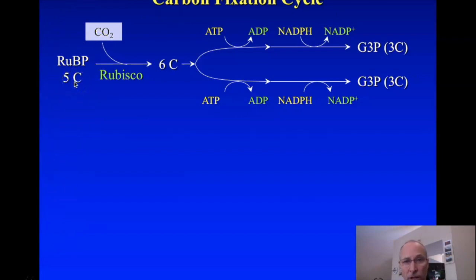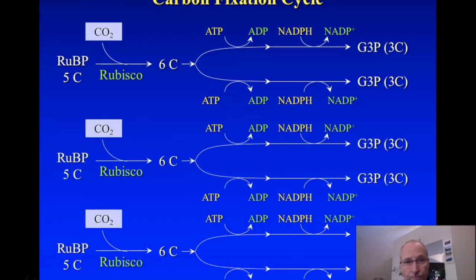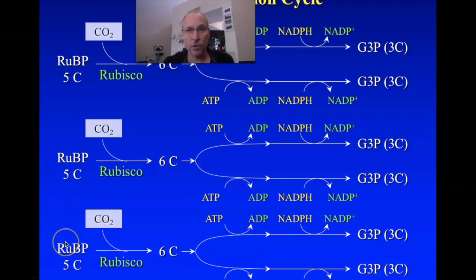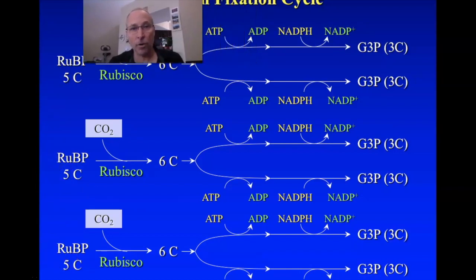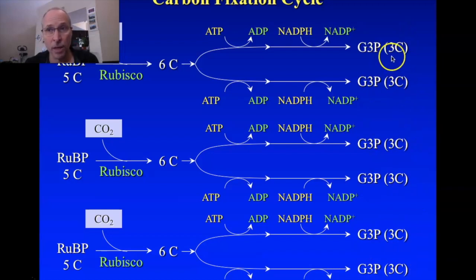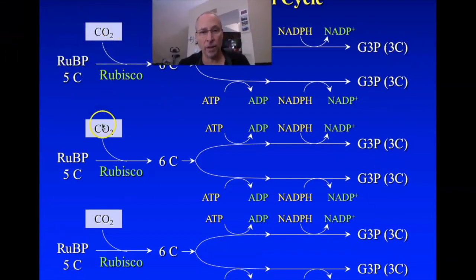Here we have one ribulose bisphosphate; we're going to do the same thing to two others. We've taken three ribulose bisphosphates — count the total carbons: five times three is 15. Now look at the G3Ps created: six G3Ps, each with three carbons, is 18 total. We started with 15 carbons and now have 18, because we've added three carbon dioxides.